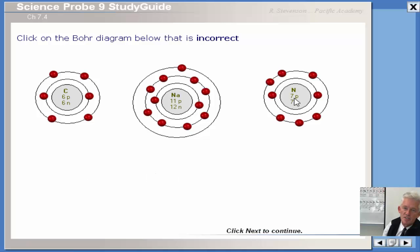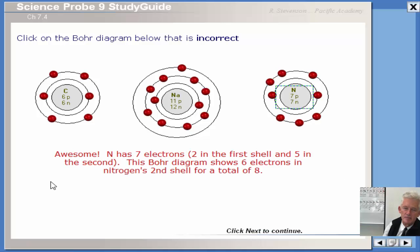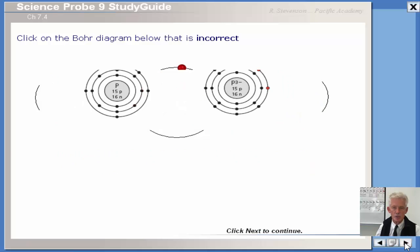Let's see. Nitrogen has an atomic number of seven. How many electrons should you have? Seven. One, two, three, four, five, six, seven, eight. Awesome. Nitrogen has seven electrons. Two in the first shell, and five in the second. This particular Bohr diagram shows six electrons in nitrogen's second shell for a total of eight. That is a no-no.